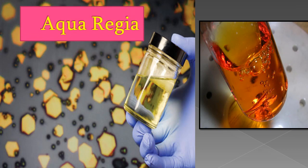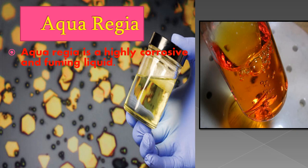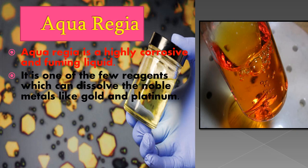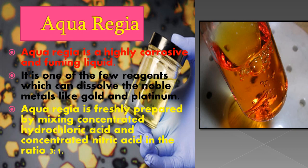Aqua regia is a highly corrosive, fuming liquid and one of the few reagents that can dissolve noble metals like gold and platinum. Aqua regia is freshly prepared by mixing concentrated hydrochloric acid (HCl) and concentrated nitric acid (HNO3) in the ratio of 3:1.